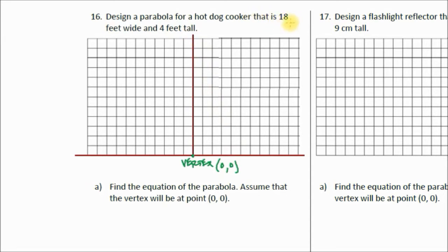We know that our hot dog cooker is going to be 18 feet wide. That means we're going to be 9 feet to the right and 9 feet to the left. We put negative 9 here because that's what our x value is. And then it's going to be 4 feet tall. So we're going to go up 1, 2, 3, 4. We know this point is on our parabola, 9, 4. We know this point is also on our parabola, negative 9, 4. We've got our graph started.